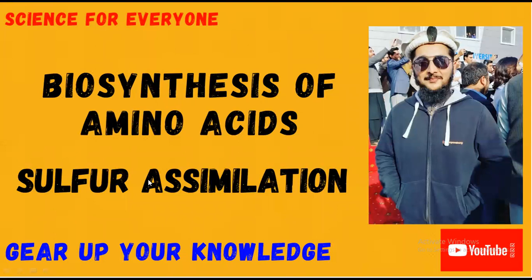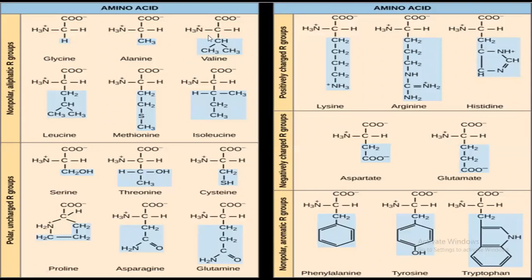Just look at this slide — there are two amino acids in which sulfur is bonded to their alkyl group. Look here at methionine: it has a sulfur component. And look here at cysteine: it is also having a sulfur element. So the question arises — where does the sulfur come from?